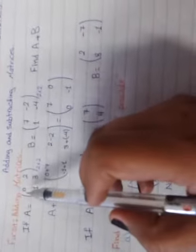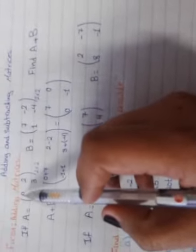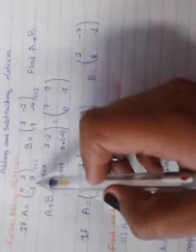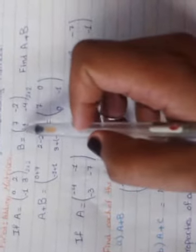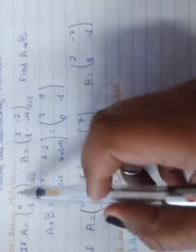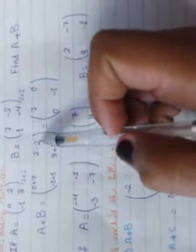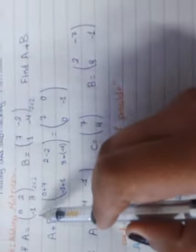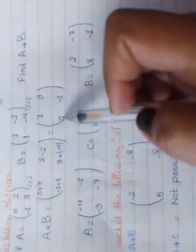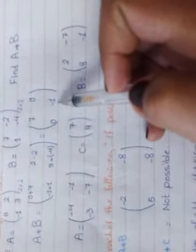If you want to add, you are going to take all the corresponding element in A and the corresponding element in B. Here 0 plus 7 equals 7. 2 plus negative 2 equals 0. Negative 1 plus 1 also equals 0. 3 plus negative 4 equals negative 1.